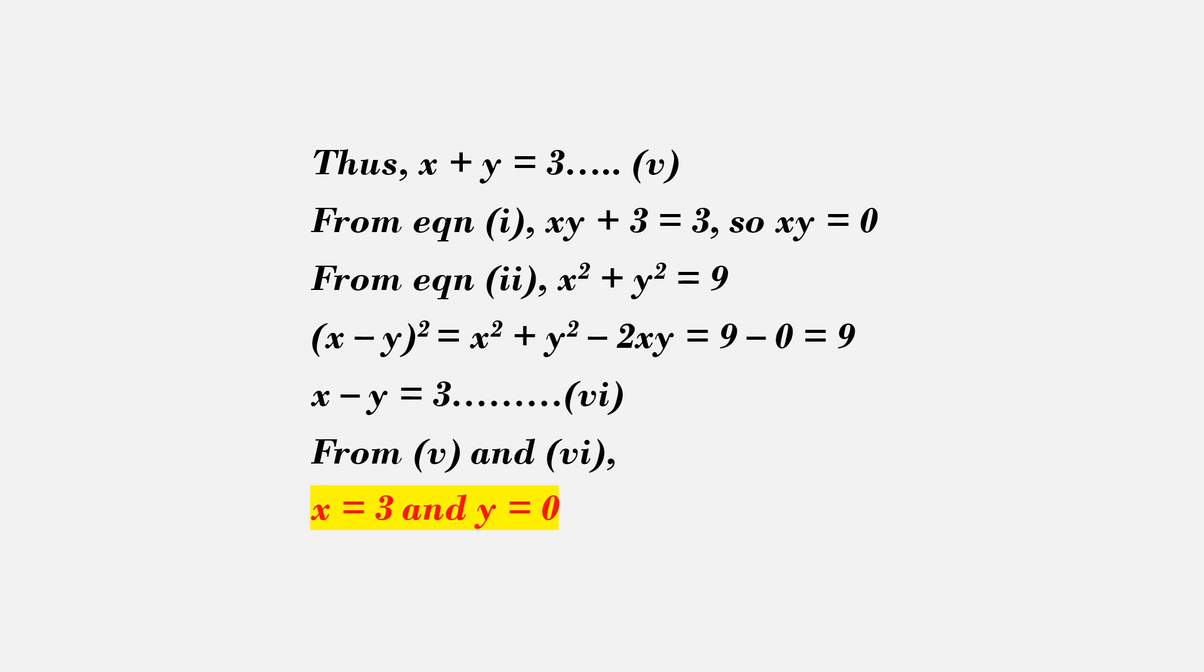Now, x squared plus y squared minus twice xy equals 9 minus 0, or 9. So, x minus y whole squared is 9. We get x minus y equals 3.